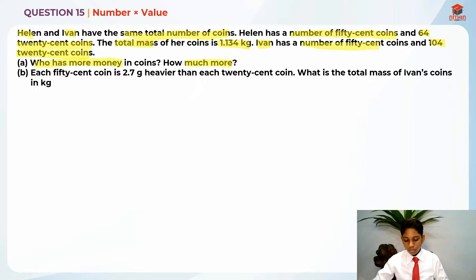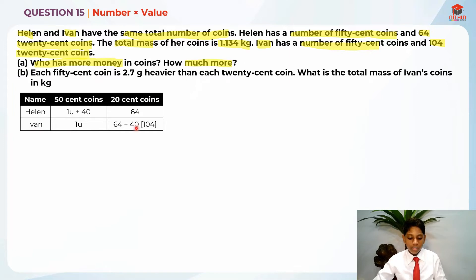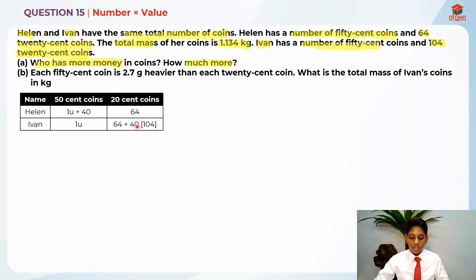I'm going to draw a value table to understand what's happening. Helen has 1 unit plus 40 fifty-cent coins and 64 twenty-cent coins. Ivan has 1 unit of 50-cent coins and 64 plus 40, which is 104, twenty-cent coins. So Ivan actually has 40 more 20-cent coins than Helen — that's why I put 64 plus 40.